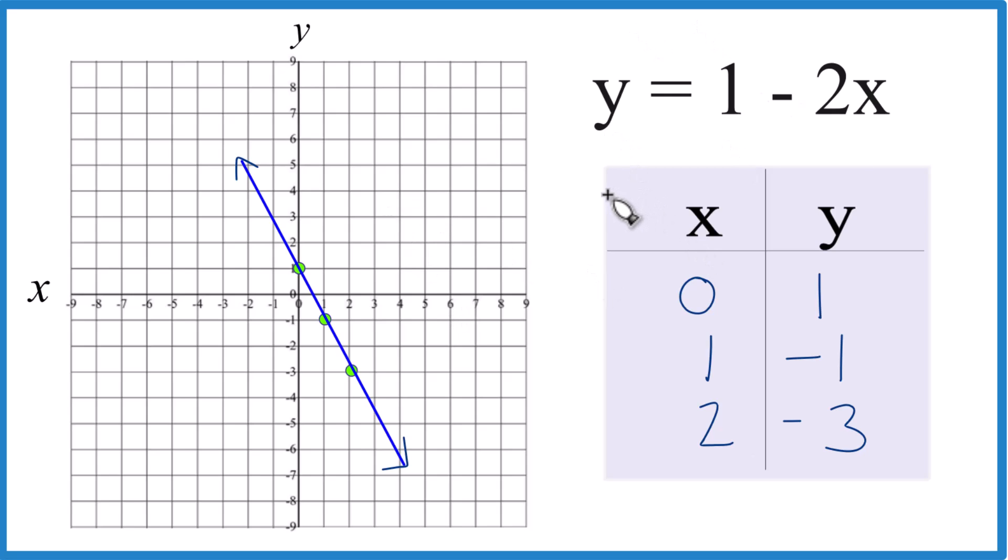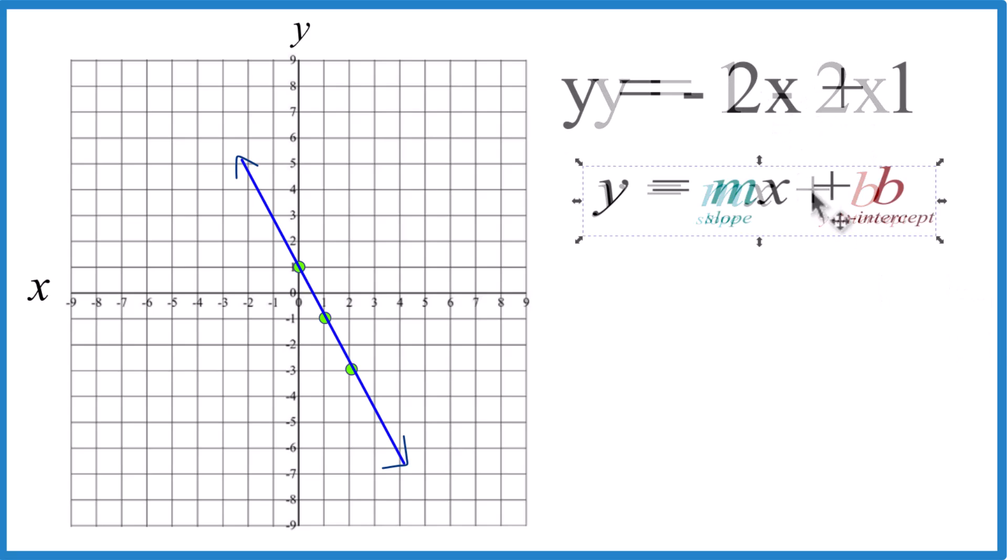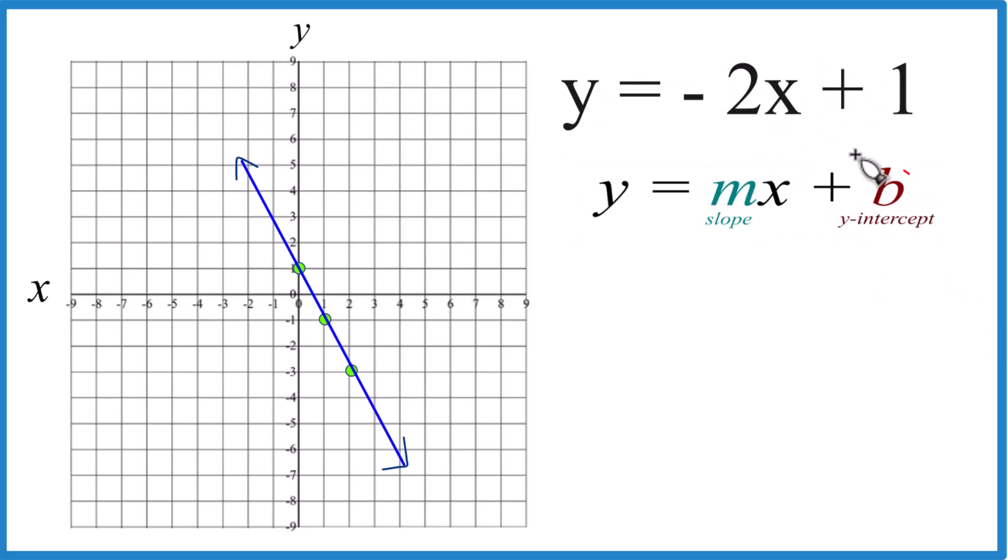Let's do it with slope-intercept form. So I'd really like the x to be up front like it is here. So I'm going to rearrange this to minus 2x plus one. It's the same thing. But now I have my y-intercept here is one that lines up, the x's line up.